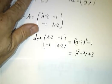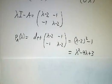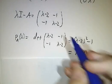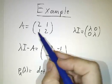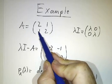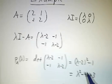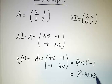You multiply it all out, and you get lambda squared minus 4 lambda plus 3. So the characteristic polynomial of this matrix is lambda squared minus 4 lambda plus 3.